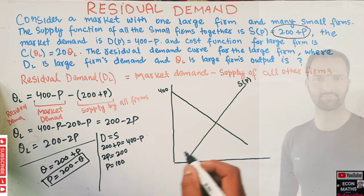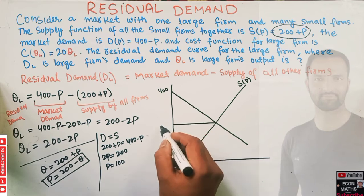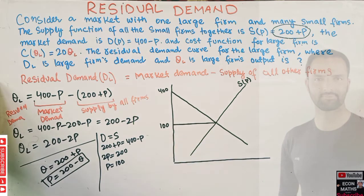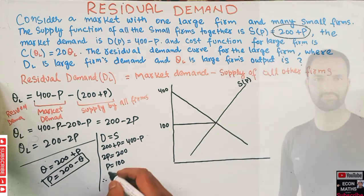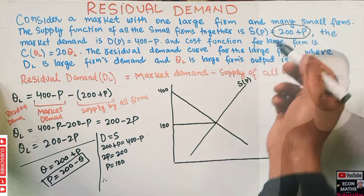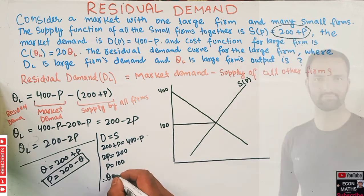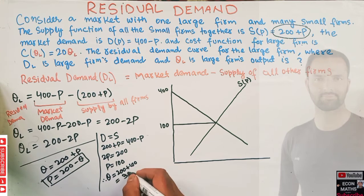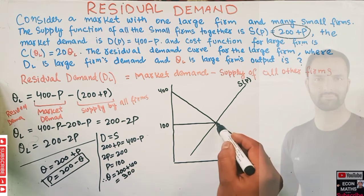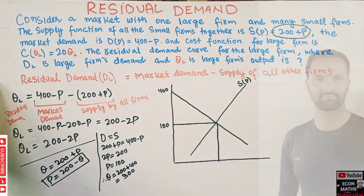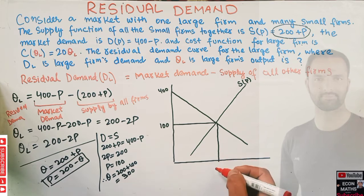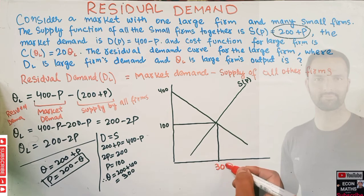When price equals 100, we plug P = 100 into the supply function: Q = 200 + 100 = 300. So at a price of 100, the total quantity demanded equals total quantity supplied, which is 300.